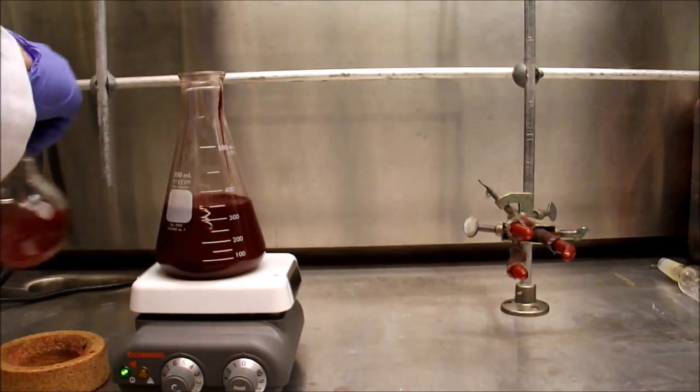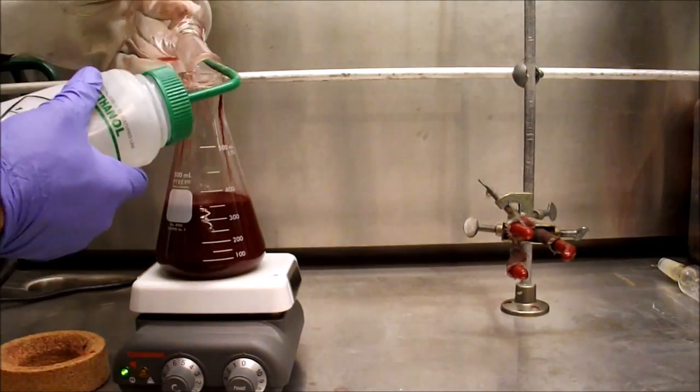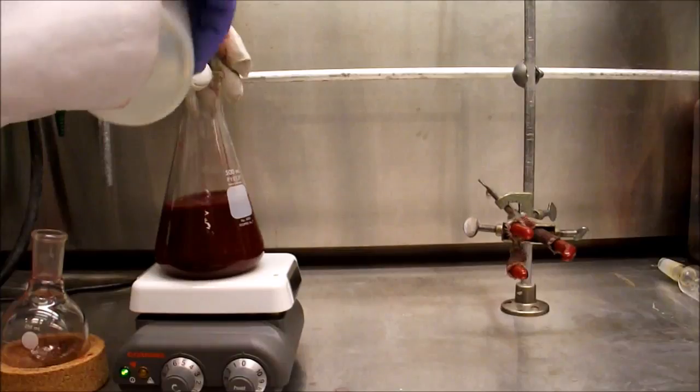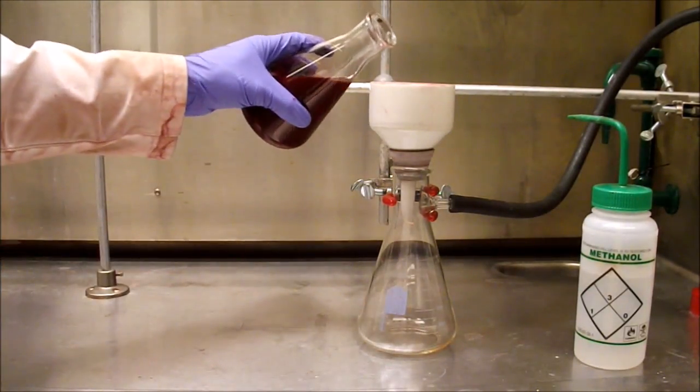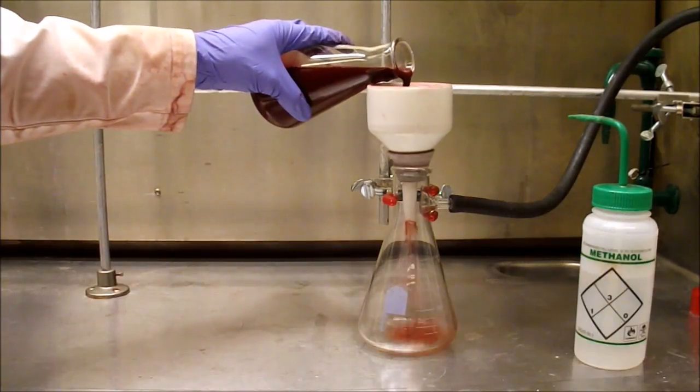After the reaction mixture is fully transferred to the Erlenmeyer flask, the methanol mixture is allowed to stir for a couple hours. Stirring the PDI in methanol allows the PDI to clump up, which makes filtering significantly faster.